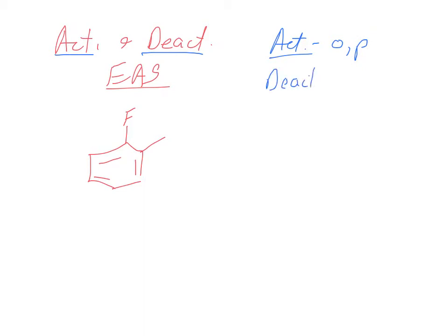All activators, if you donate electrons, are ortho-para directors. Deactivators for the most part direct meta. But they're deactivating the ring. The ones that are tough are the halogens.